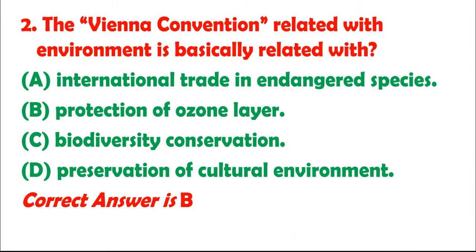Question 2: The Vienna Convention related with environment is basically related with: A. International trade in endangered species. B. Protection of ozone layer. C. Biodiversity conservation. D. Preservation of cultural environment. Correct answer is B.